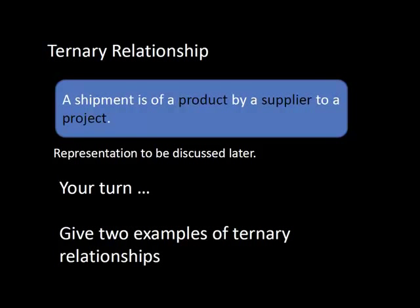If you try to break it up into three binary relationships you will lose information — you will not be able to find out that this supplier supplied this product to this project. You'd only know that this supplier supplied this product, possibly to many projects; this supplier supplied to this project, possibly any product; and this product was supplied to this project, possibly by any supplier. This relationship necessarily involves all three entity types simultaneously.